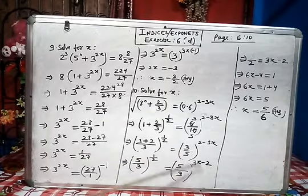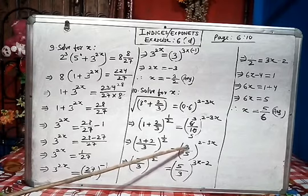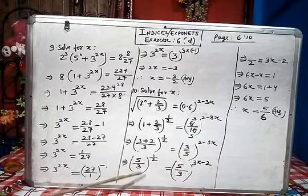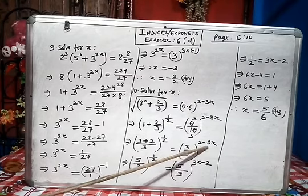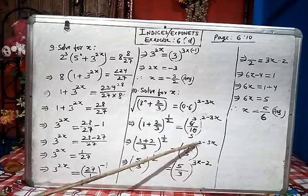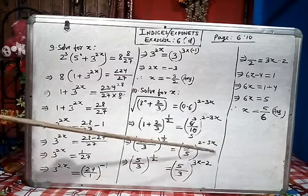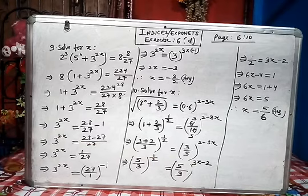I can make both the base equal if I interchange 3/5 as 5/3. I wrote 3/5 as 5/3. Why? Because I want to make base same both sides, left hand side as well as right hand side. When I interchange numerator and denominator, negative power becomes positive and positive power becomes negative. Minus 3x is negative power, I made it plus 3x. Plus 2 is positive power, I made it minus 2. So positive value I wrote first and negative value I wrote second.